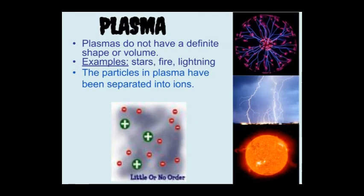The fourth state of matter is called plasma. Plasmas are very unique. They're not like solids, liquids, and gases where the particles remain as atoms. Instead, these particles have been changed into something called an ion, which we'll talk more about later. Plasmas don't have a definite shape or a definite volume. It's the kind of substance you might find in a star, in fire, or in lightning. It's not a solid, not a liquid, and not a gas — it's a fourth state called plasma, and it's different because the particles have changed.